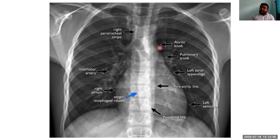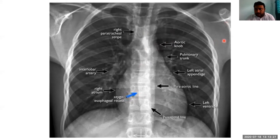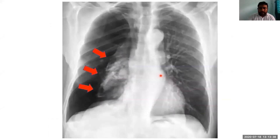We generally take the chest X-ray in PA view. But if the patient is debilitated or post-trauma and cannot be mobilized, we take an AP view instead. In the AP view, the exposure is not proper because the scapula is not seen clearly, and the clavicle may also appear differently. This is a chest X-ray PA view.